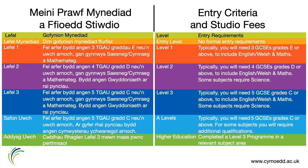For our Level 2, you will need four GCSEs at grades A* to E including English or Welsh and maths or numeracy, or a Level 1 Diploma at merit grade or above in a creative-related subject, including literacy and numeracy at Level 1. For our Level 3, you will need five GCSEs at A* to C including English or Welsh and maths or numeracy, or a BTEC Level 2 Diploma at merit grade in a creative-related subject.